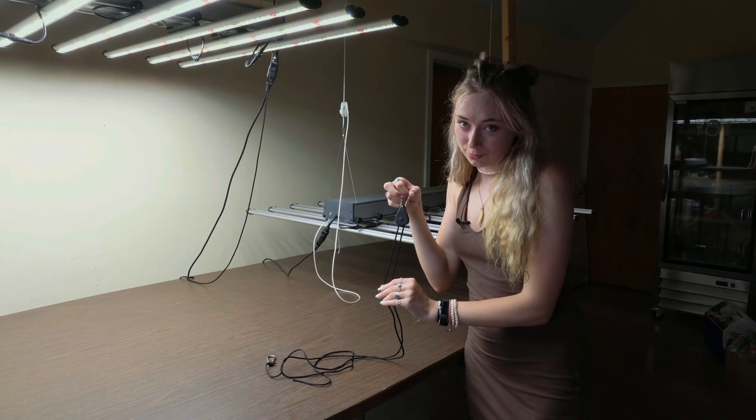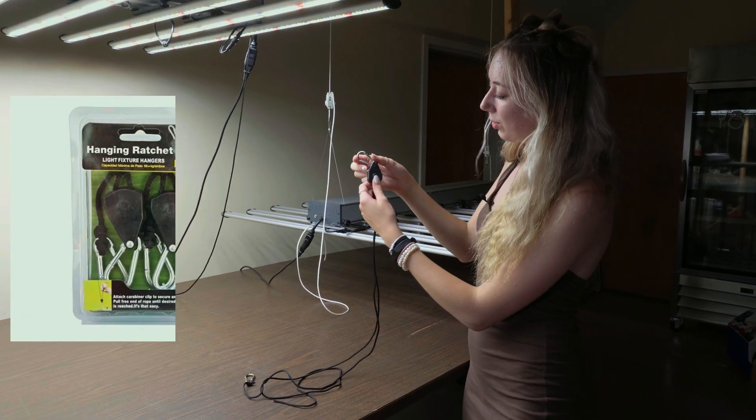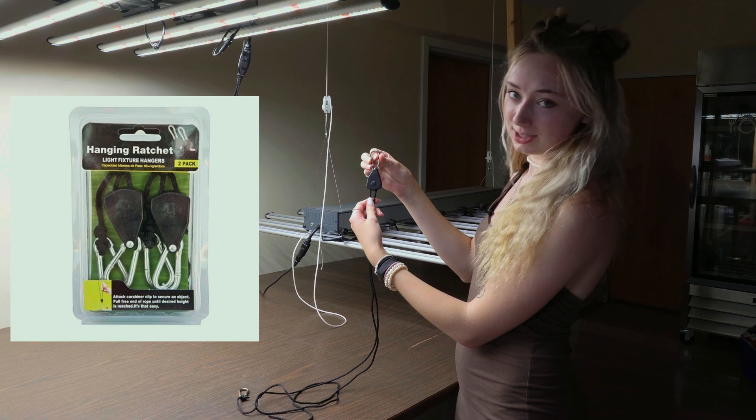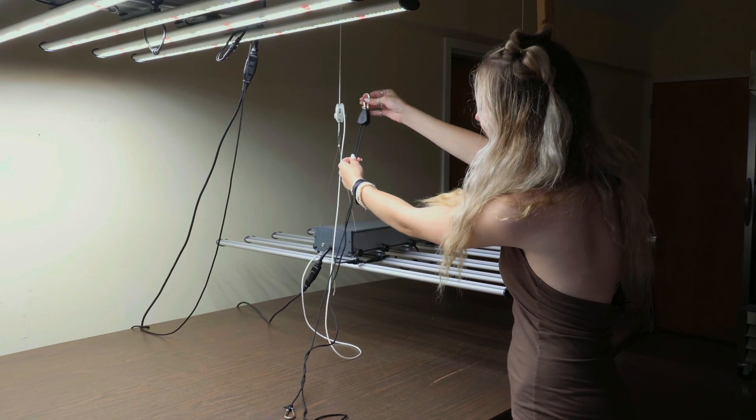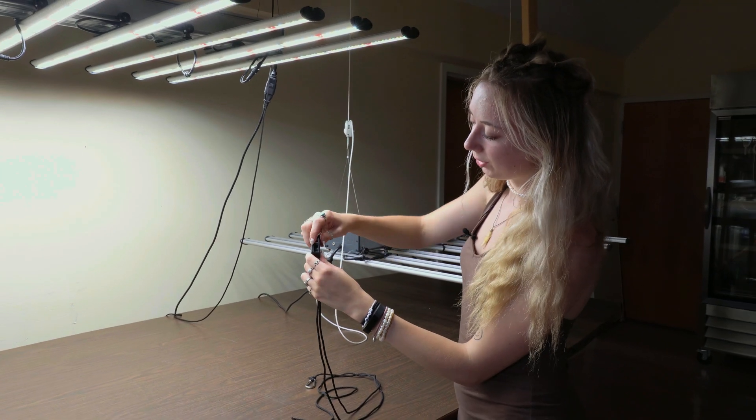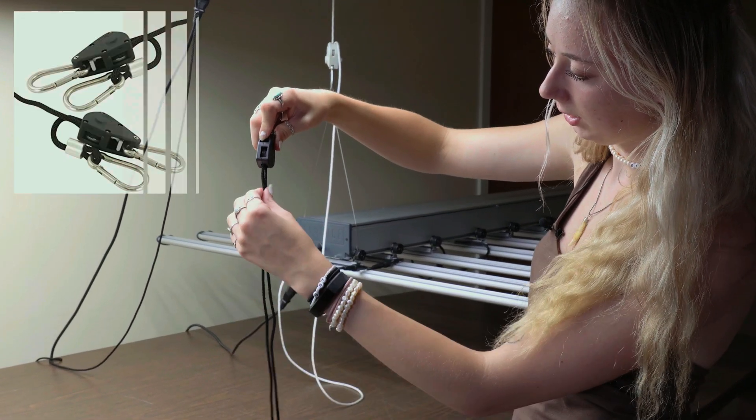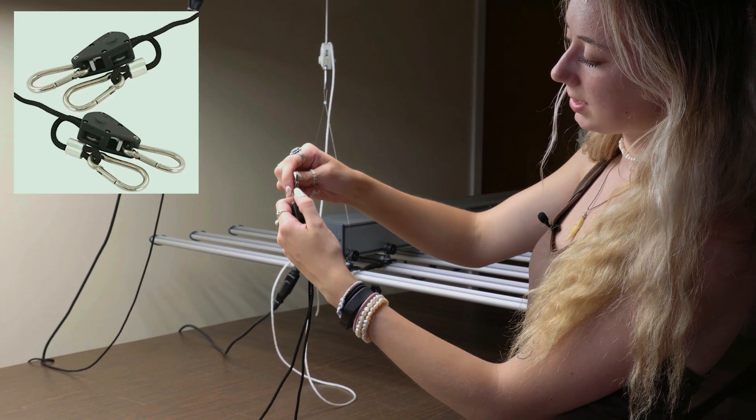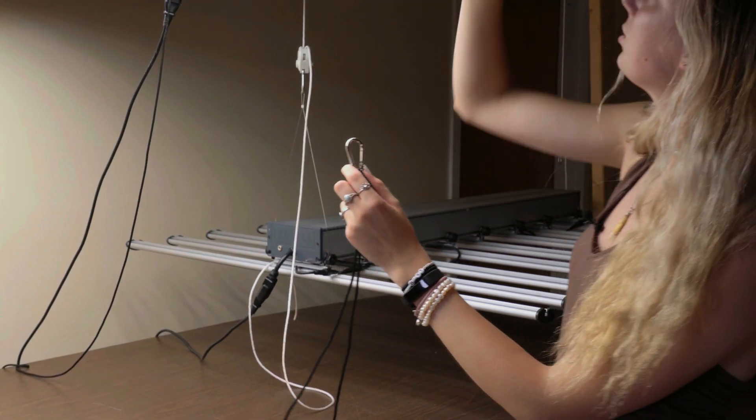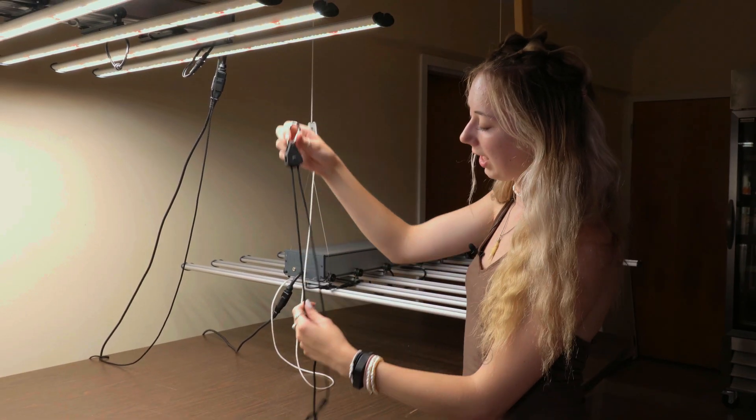This is our ratchet strap 101 for lighting. So this is a pretty basic ratchet strap. They don't differ too much. As you can see, pretty similar. This one, however, you pull up on this little lever and you can adjust it accordingly. You would hang it up by this clip onto whatever structure you have available to hang your lights.